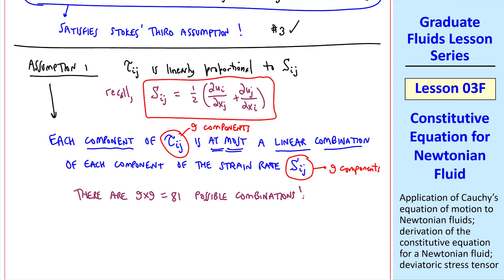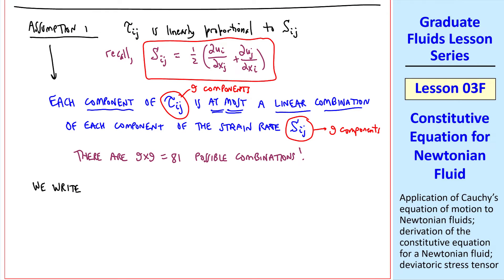So we conclude that there are nine times nine, or 81, possible combinations. Mathematically, we would write tau11 equals some coefficient k1111 s11 plus k1112 s12 plus nine of such terms, ending with k1133 s33. There are nine terms for deviatoric stress tensor component tau11.